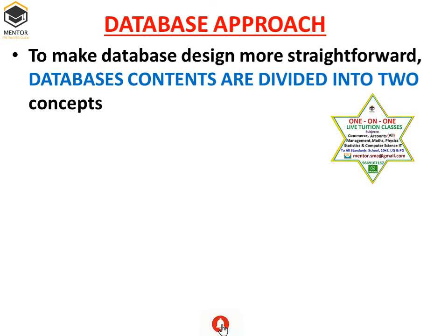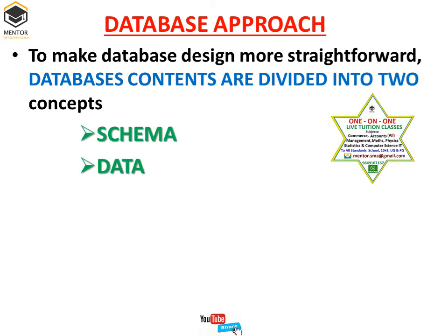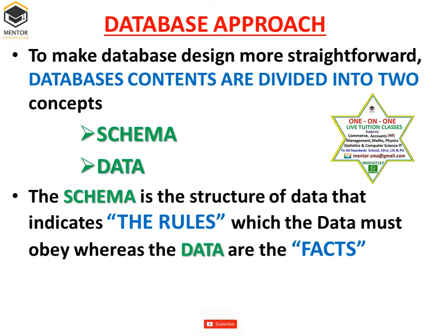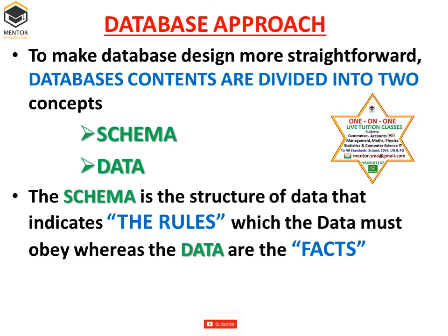The two concepts are: first, schema; and second, data. Schema is the structure of data — it indicates rules which the data must obey. Whereas data are the facts. Schemas tell how the data should be stored in the database, what the different parameters or rules are that the data must follow to come into the database. These schemas are defined as rules and are visible to the users who are using the database in the form of certain validation controls or instructions.